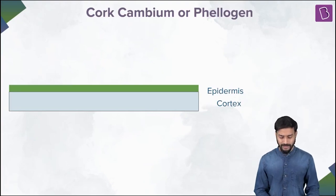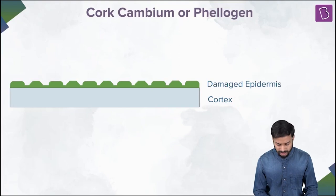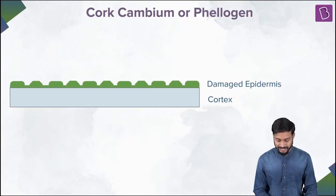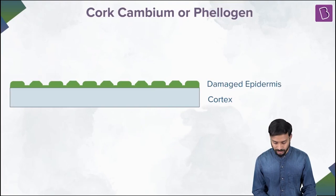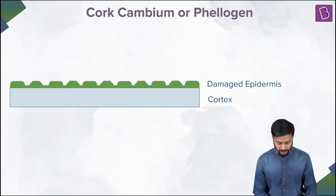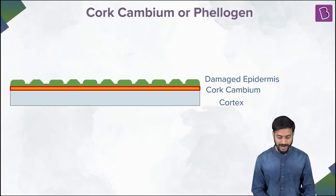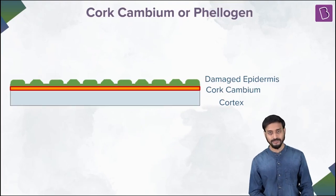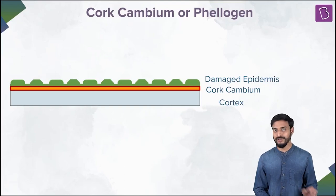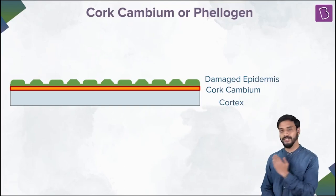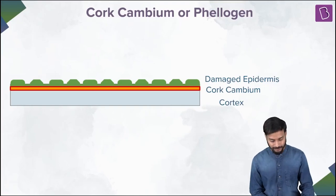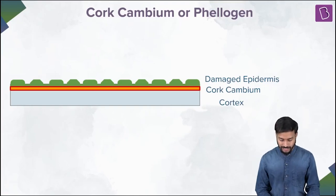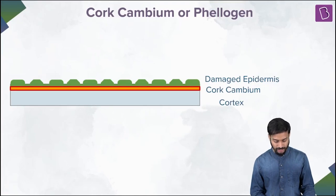The epidermis is there and it starts breaking. It gets damaged and a new layer of lateral meristems — the cork cambium — pops up. Can you see the cork cambium? It's a new layer which has come up.